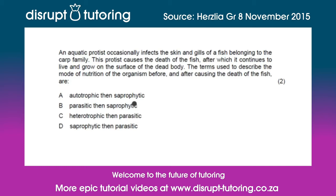Let's read it in full before we decide on which possible answer is correct. The question reads: an aquatic protist occasionally infects the skin and gills of a fish belonging to the carp family. The protist causes the death of the fish, after which it continues to live and grow on the surface of the dead body. The terms used to describe the mode of nutrition of the organism before and after causing the death of the fish are: A) autotrophic then saprophytic, B) parasitic then saprophytic, C) heterotrophic then parasitic, or D) saprophytic then parasitic.